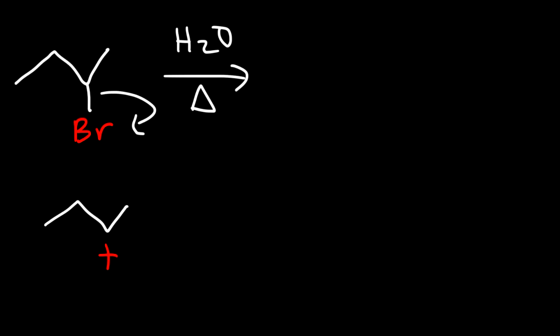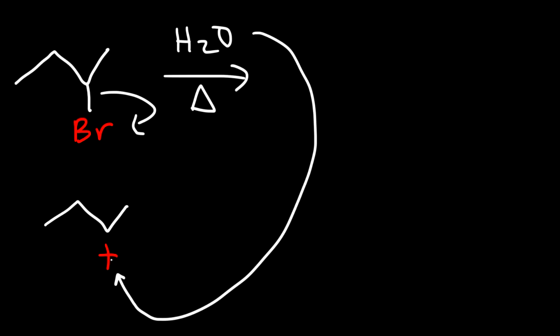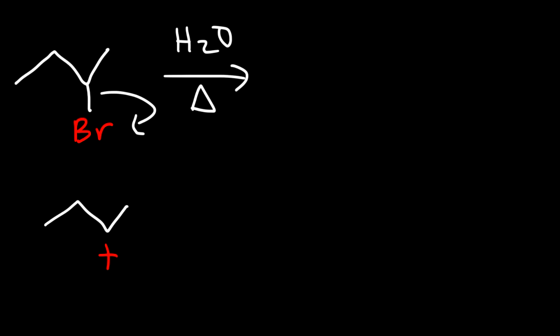When dealing with elimination reactions, we need to treat water as a base rather than a nucleophile. If we treat it as a nucleophile and it attacks the carbocation intermediate, then it's going to give us the SN1 product. But to get the E1 product, it has to behave as a base. We need to remove an adjacent hydrogen — a hydrogen that's one carbon away from the carbocation.